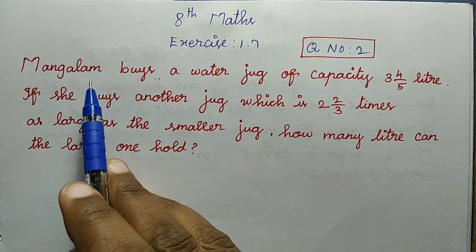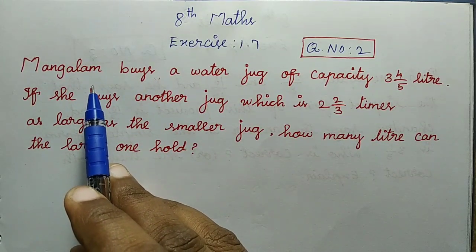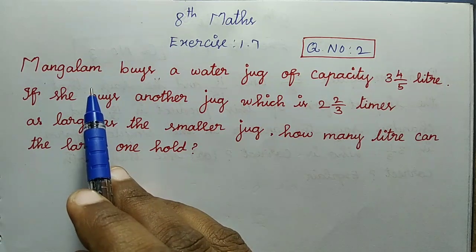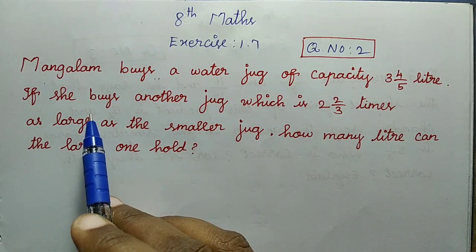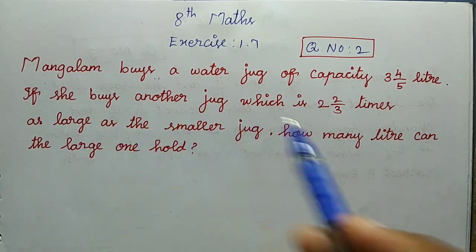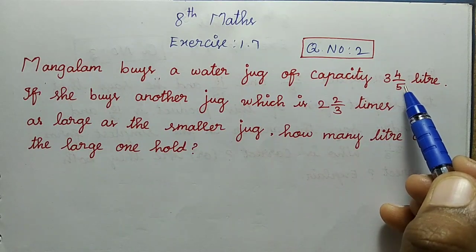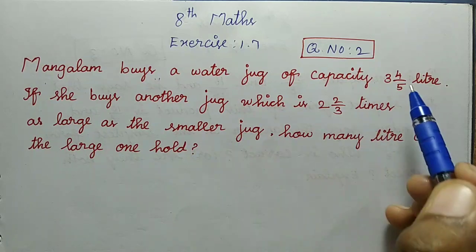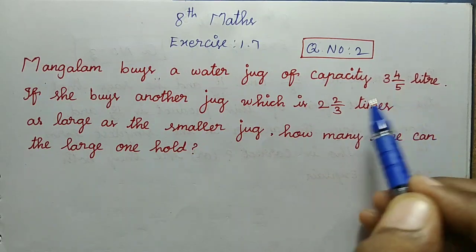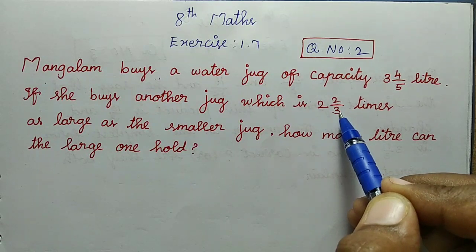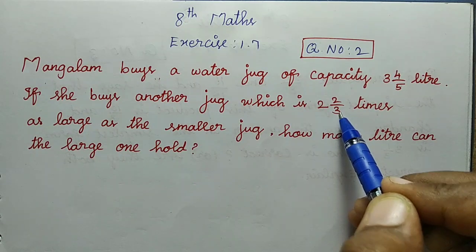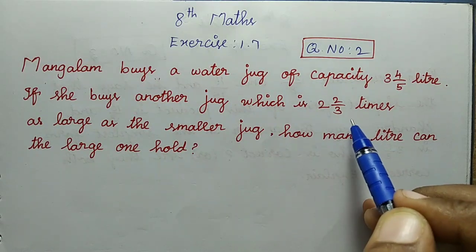So here we have 2 water jugs, one is smaller, another one is larger. The capacity is 3 4/5 litres. The larger jug is 2 2/3 times as large as the larger jug.